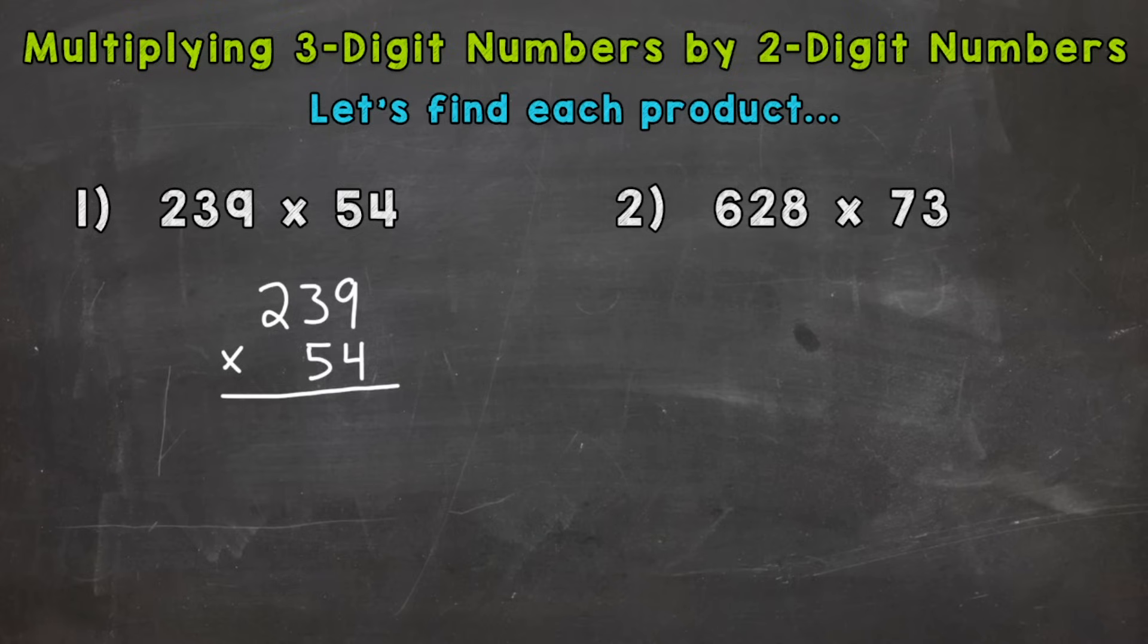And then we add those two answers together to get our final product or answer. So let's start with four times nine, which is 36. So we put our six here and we carry our three that has a value of 30 over to the tens place. Now we're doing four times 30 because that three is in the tens place, but we can just think of it as four times three and then add that three that we carried. So four times three is 12 plus three is 15.